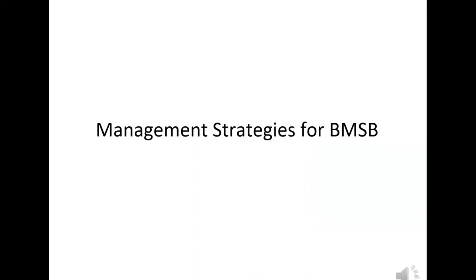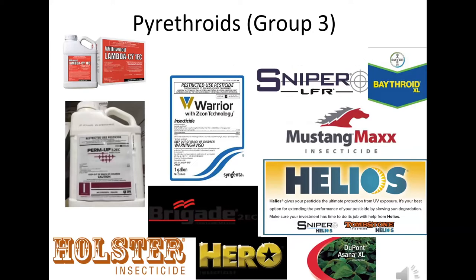Moving into management strategies — I've worked with this for 15 years now. There's no doubt that synthetic pyrethroids — Group 3, sodium channel modulators — are probably the most effective group and the one that growers turn to most because they're labeled on so many different crops. This is just a snippet — there are many pyrethroids out there, and most of them do the job really well on stink bugs. If you're a conventional grower, there's probably a pyrethroid that is a good stink bug material.